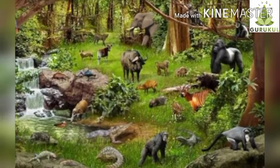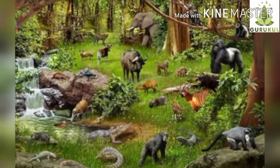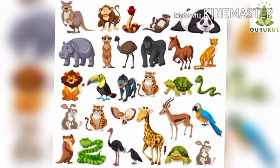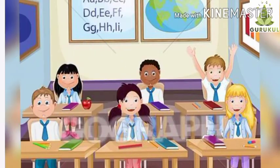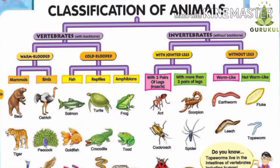Oh wow, what a beautiful scene of animals! There are different types of animals. There are differences in the colors, shapes, and sizes of animals, and also in their movements. That's why scientists classify animals according to certain important characteristics. The animals are divided into two groups: vertebrates and invertebrates.